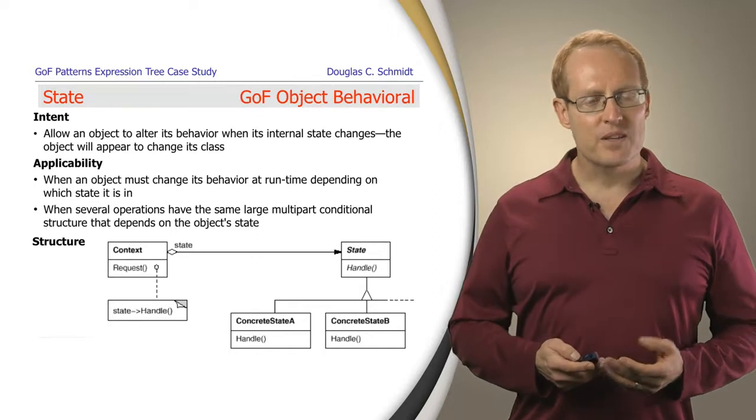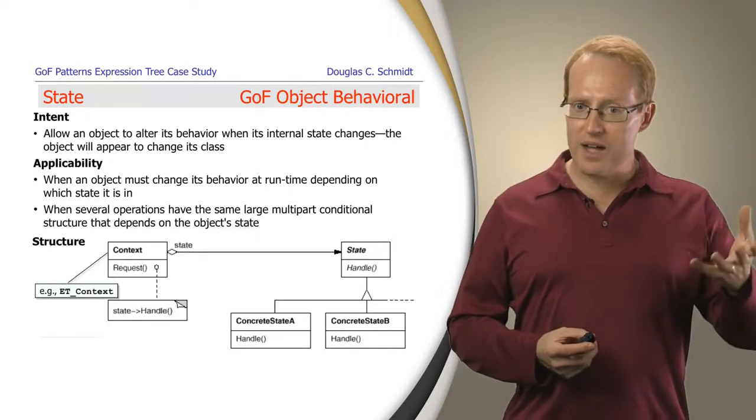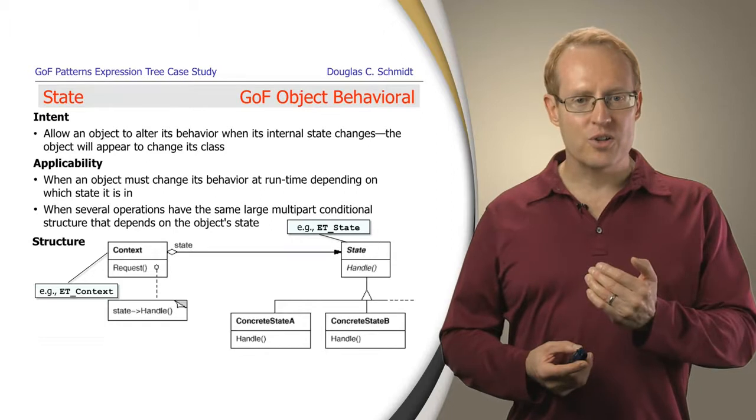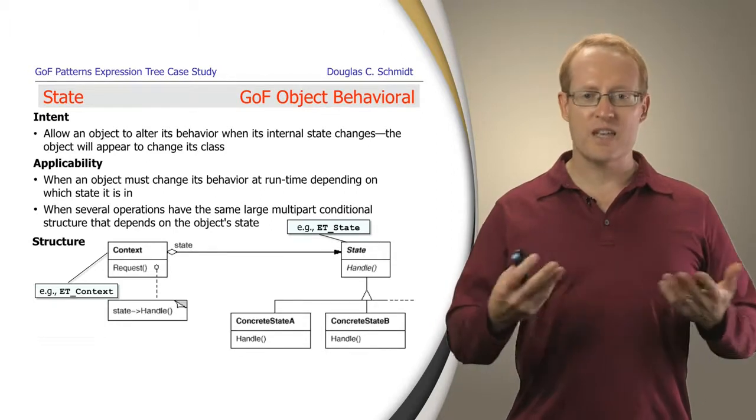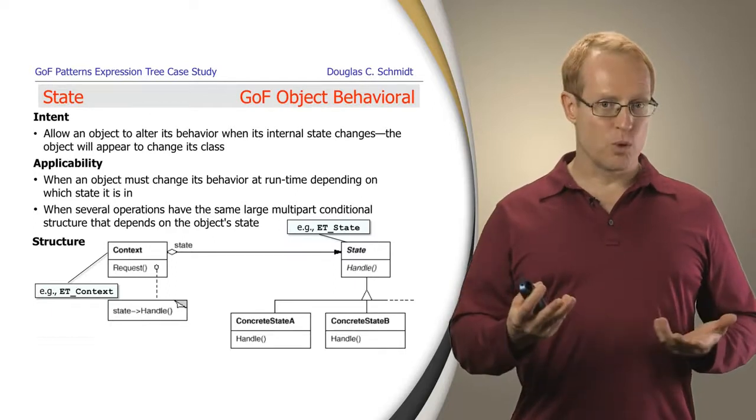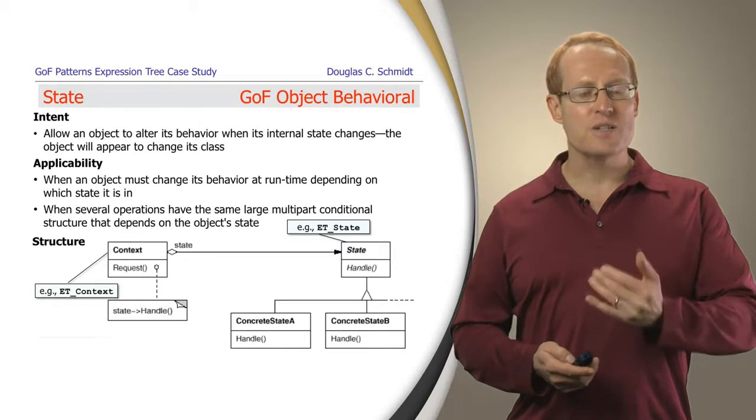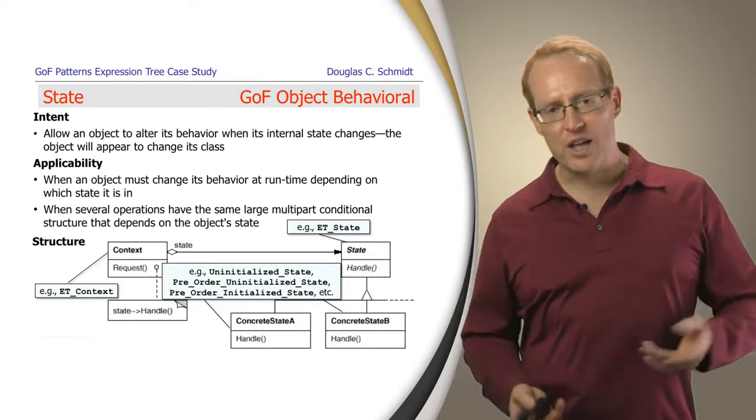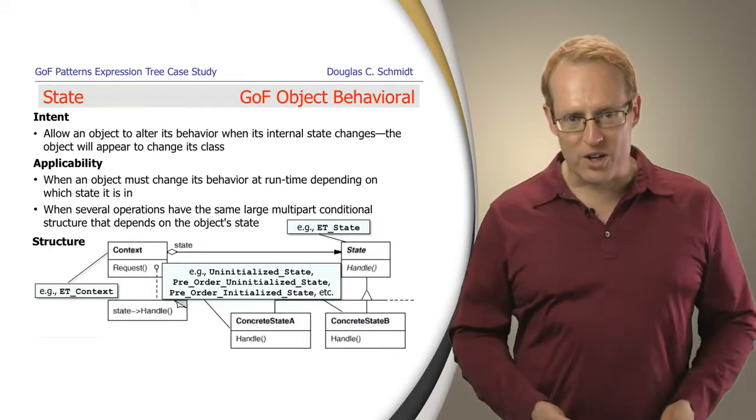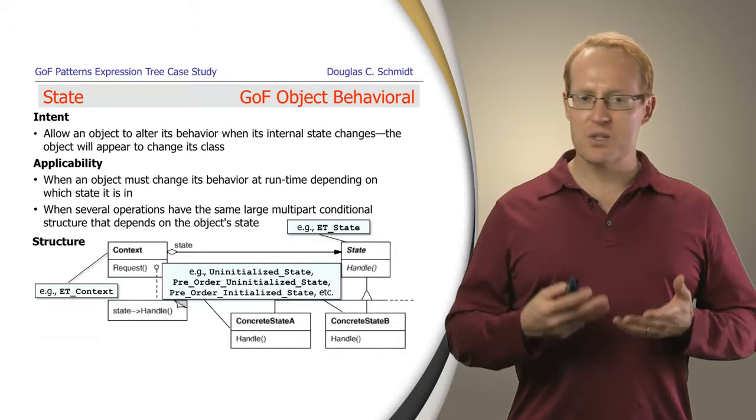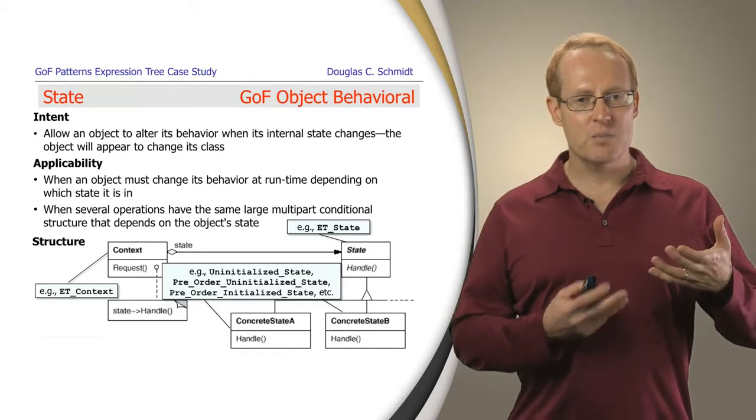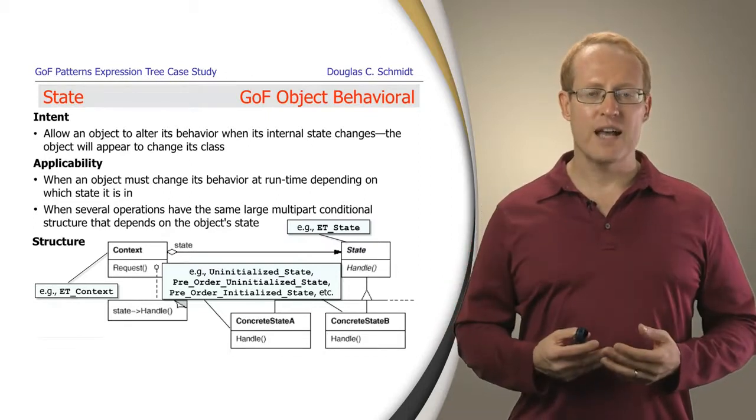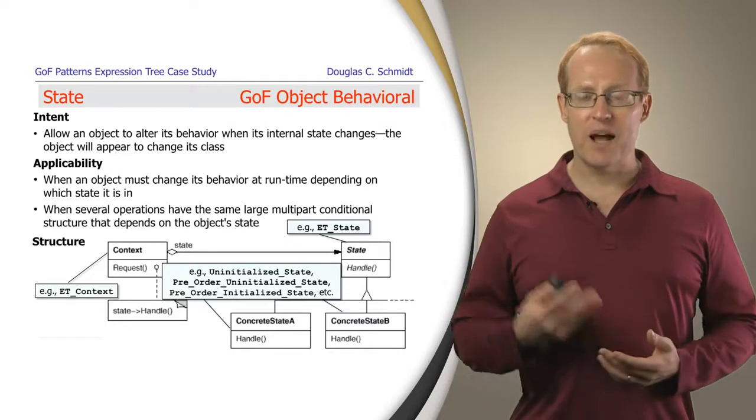This slide also illustrates the structure of the solution. As you can see we have a context class which is in our case the expression tree context or ET context. And then you have a pointer to an object that points to a base class which in this case is the ET state class or more generally the state class in the pattern. And then you have a number of different concrete states that inherit from that base class. In our case these would be the uninitialized state, pre-order initialized state, post-order initialized state, in-order uninitialized state, and so on and so forth. And of course this is just the magic of object-oriented design and programming. When the context makes a method call it'll be dispatched through a pointer to the ET state object when in fact it'll be calling down to some subclass through dynamic binding and virtual functions and so on.